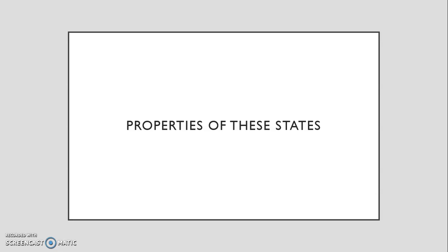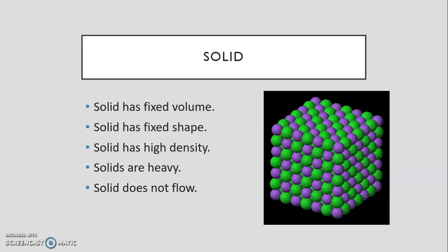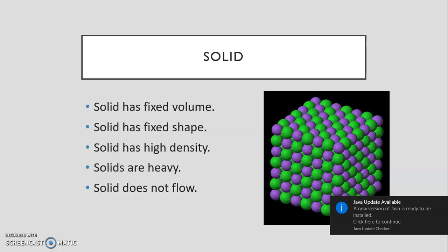Now moving on to the properties of these states. A solid - the properties of a solid include: solid has fixed volume, solid has fixed shape, solid has high density, solids are heavy, and solids do not flow. With the fixed volume, this means that the solid cannot be added to in volume or weight basically, and it can't be taken away from it, from the particles. It has a fixed shape, so it cannot change shape unless you were to break it. It doesn't flow anywhere.